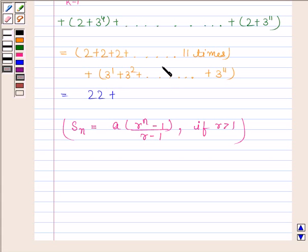So, the sum of GP series is equal to 3 into R to the power N which is 3 to the power 11 minus 1 upon 3 minus 1.